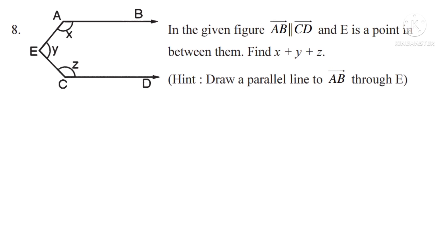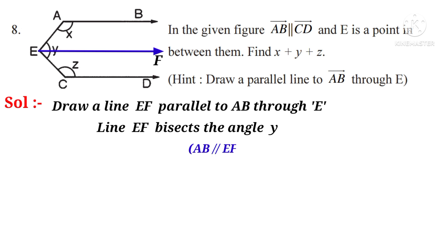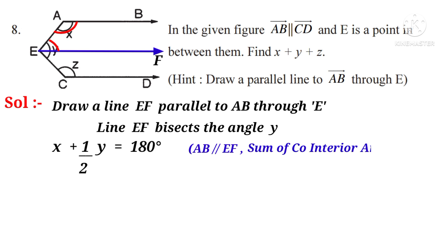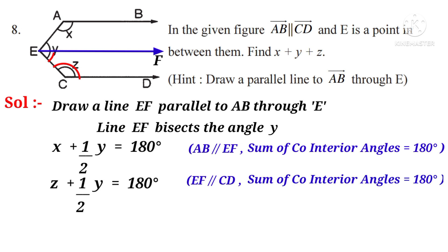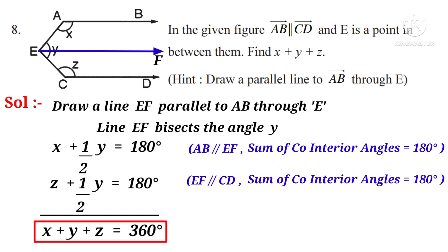Problem 8. In the given figure, AB is parallel to CD and E is a point in between them. Find X plus Y plus Z. Solution: Draw a line EF parallel to AB and CD through point E. Line EF bisects angle Y into two halves. Since AB is parallel to EF, co-interior angles give X plus half Y equals 180 degrees. Since EF is parallel to CD, half Y plus Z equals 180 degrees. Adding both equations: X plus Y plus Z equals 360 degrees.